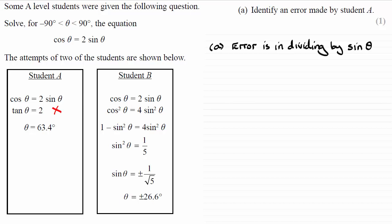I'll explain why. If we took the equation cosine theta equals two sine theta, and if we were to divide both sides by sine theta, you would end up with cosine theta over sine theta equaling two.